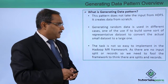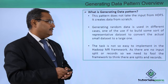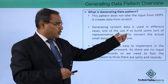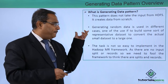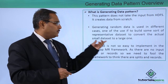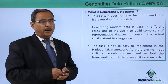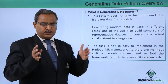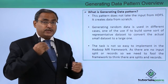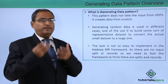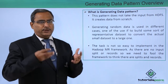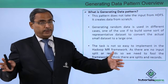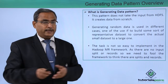Generating random data is used in different cases. One of the uses is to build some sort of representative data set, to convert the actual small data set to a large one. Where we are having a few number of records in a small data set, we can put such new data sets from scratch using some random functions, and with the help of which we are going to get a healthy, long data set.